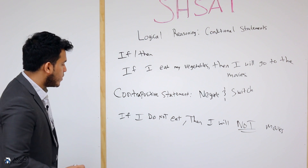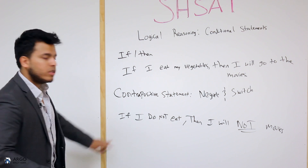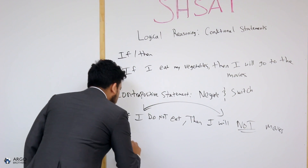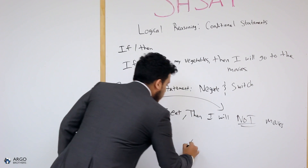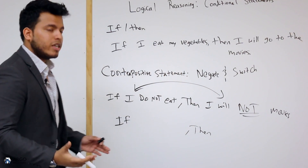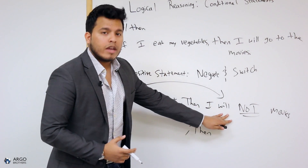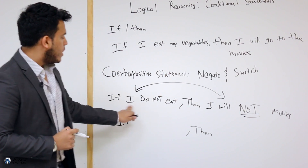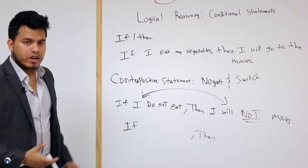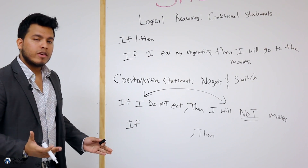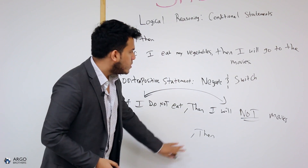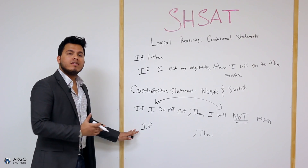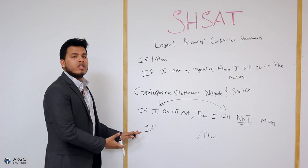These are very easy questions to get correct on the exam. Now you have to switch the statements — super simple. You always keep your if-then structure, and you're simply switching them. So: if I do not go to the movies, then I did not eat my vegetables. And that is a valid statement, and that is most likely your answer.